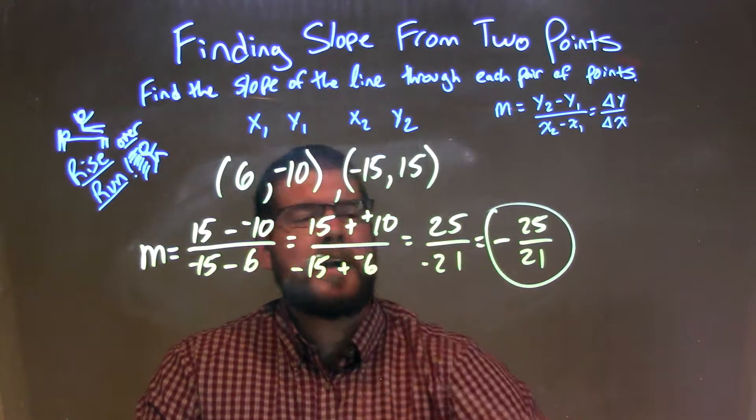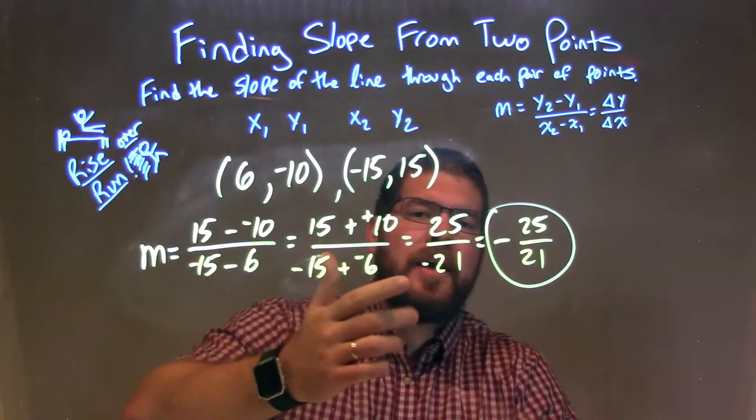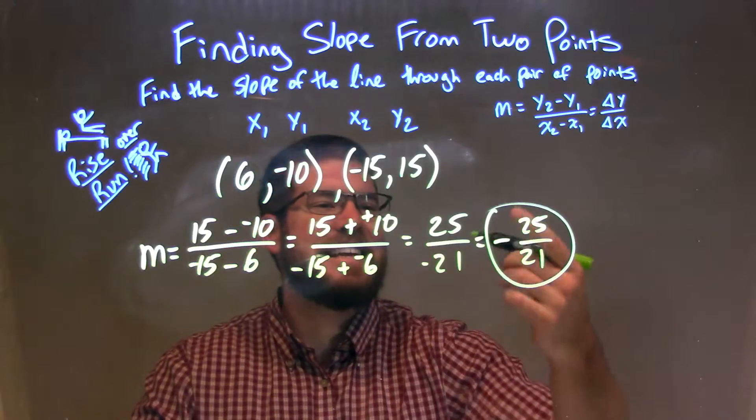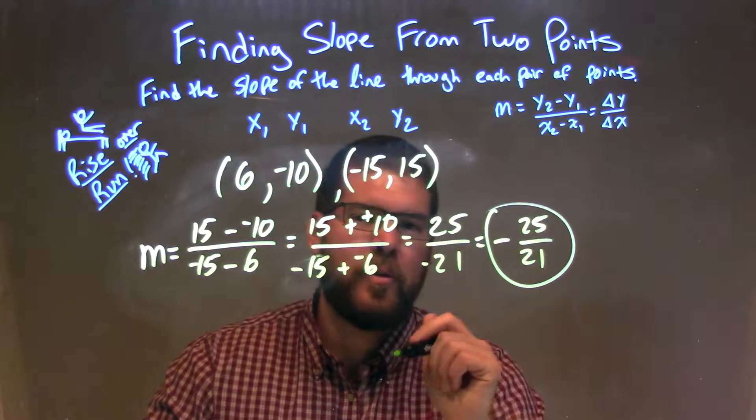Couldn't simplify that fraction anymore, so I have my final answer with the negative right up there in the middle. And my final answer, my slope between these two points is negative 25 over 21.